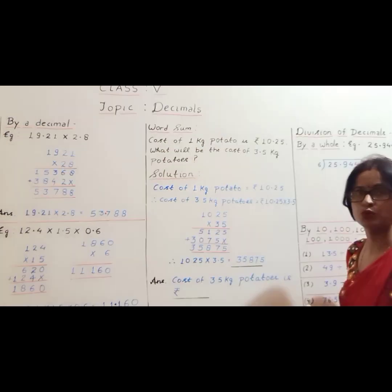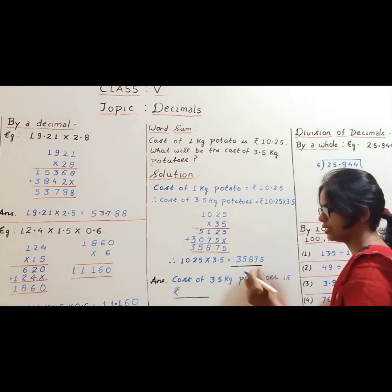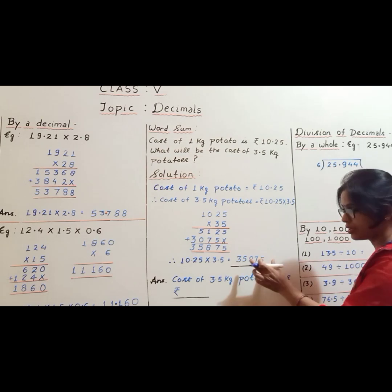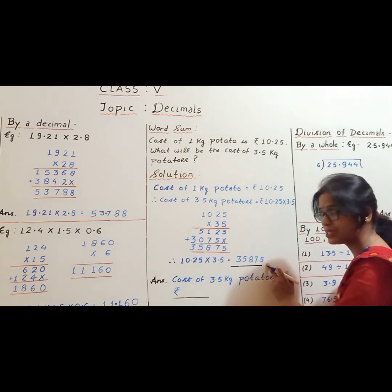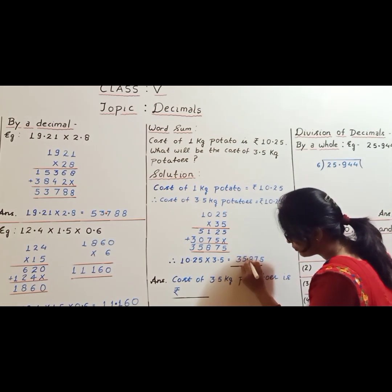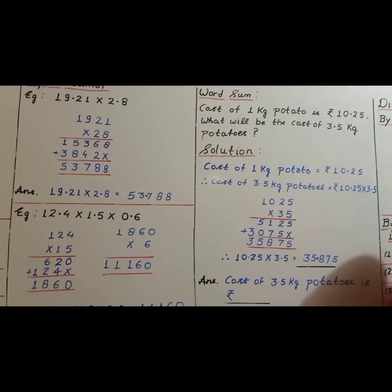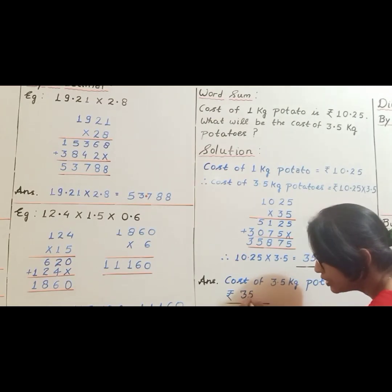Now the very important thing is where to put the decimal. The rule is the same: count decimal places — 2 in the first number and 1 in the second — so 2 plus 1 is 3. There must be 3 decimal places in the product. Count from the right: 1, 2, 3, and put the decimal there. The answer is 35.875. Money can only be expressed up to 2 decimal places, so we round it off and the approximate cost of 3.5 kg of potatoes is ₹35.88.